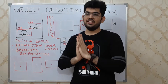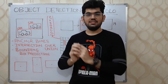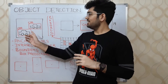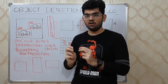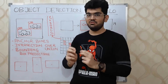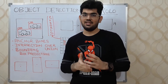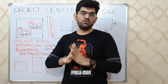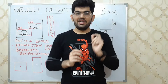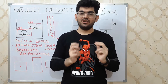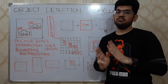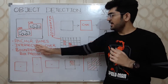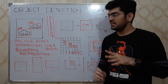In object detection for self-driving cars, we have to localize objects and classify them — for example, given two cars, we need to find their positions and decide whether they are cars, pedestrians, bicycles, and so on. The algorithm we are going to discuss for 2D object detection is YOLO — Y-O-L-O — which stands for You Only Look Once. We can divide the YOLO algorithm into three stages: anchor boxes, intersection over union, and bounding box predictions.